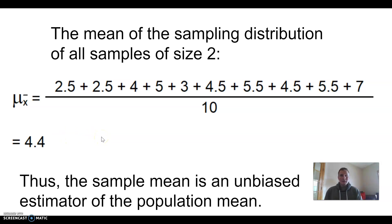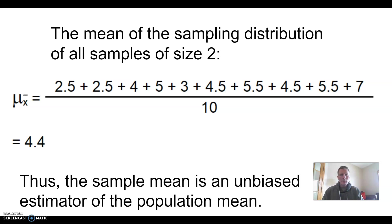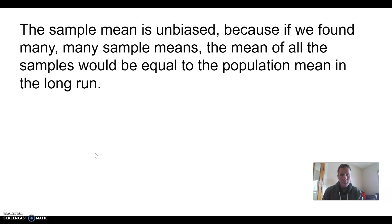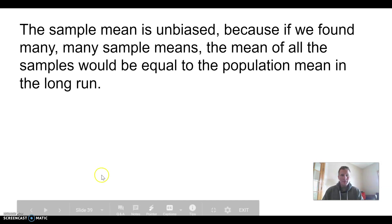We say the sample mean is an unbiased estimator of the population mean, because in the long run, on average, you will get 4.4. The average of all possible samples is 4.4. So the sample mean is unbiased — if we found many, many sample means of size two, the mean of all the samples would equal the population mean. Both are 4.4.